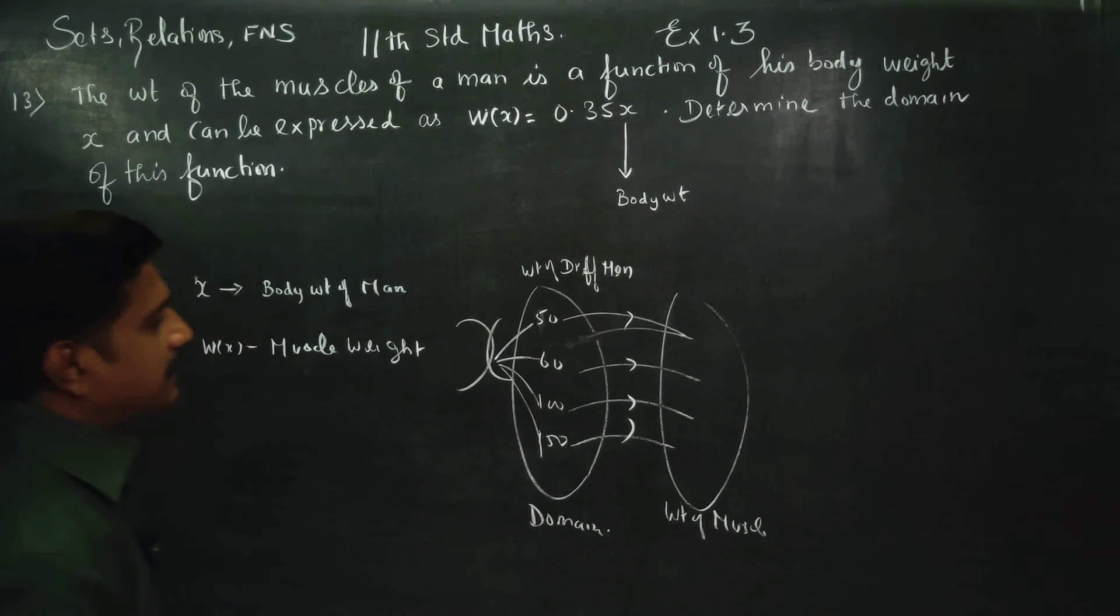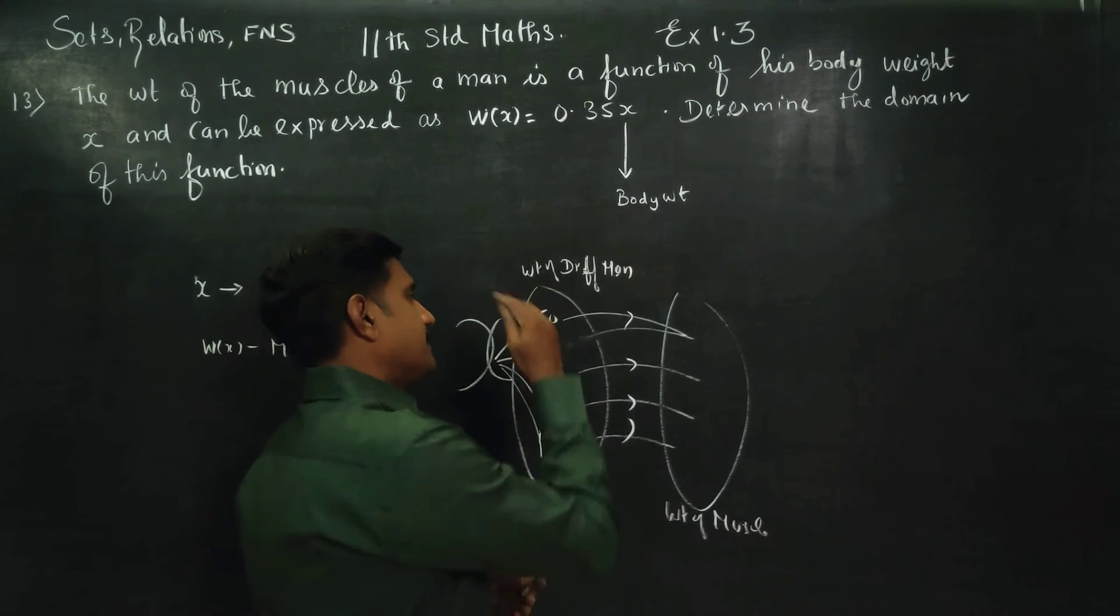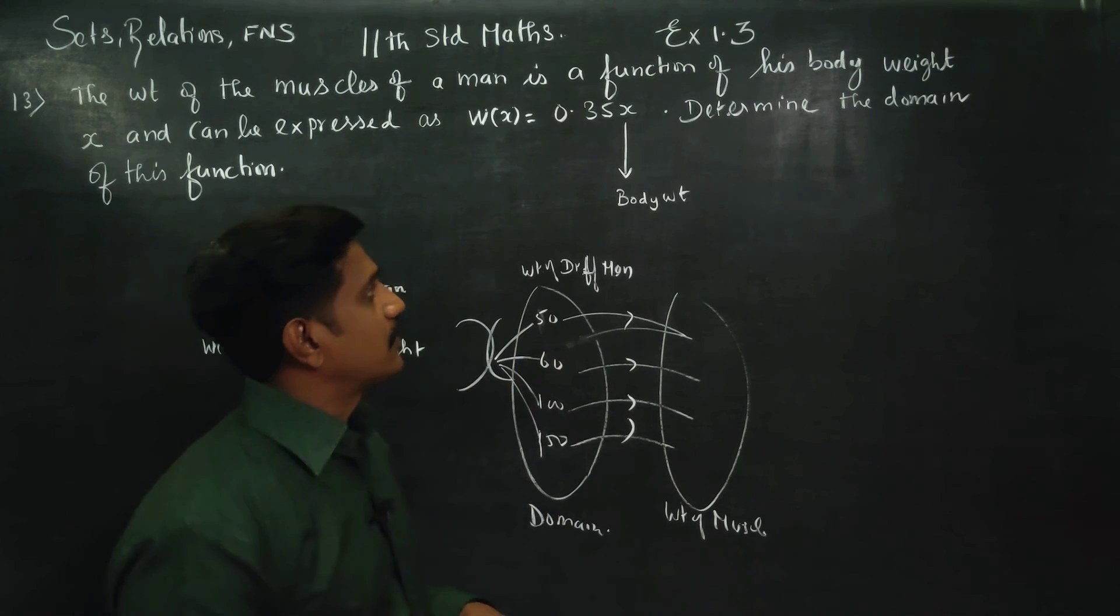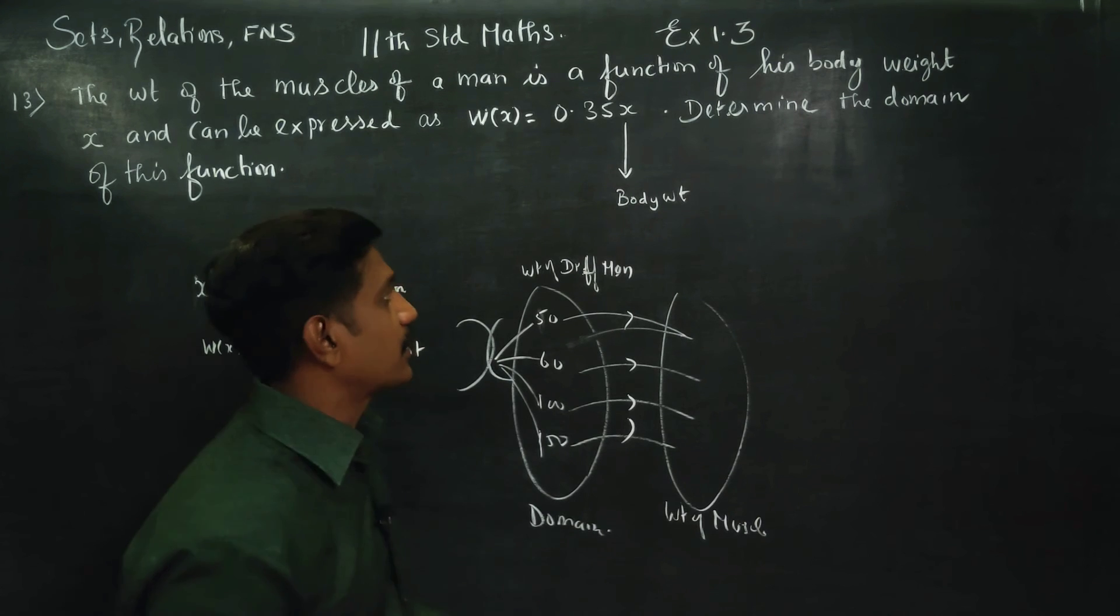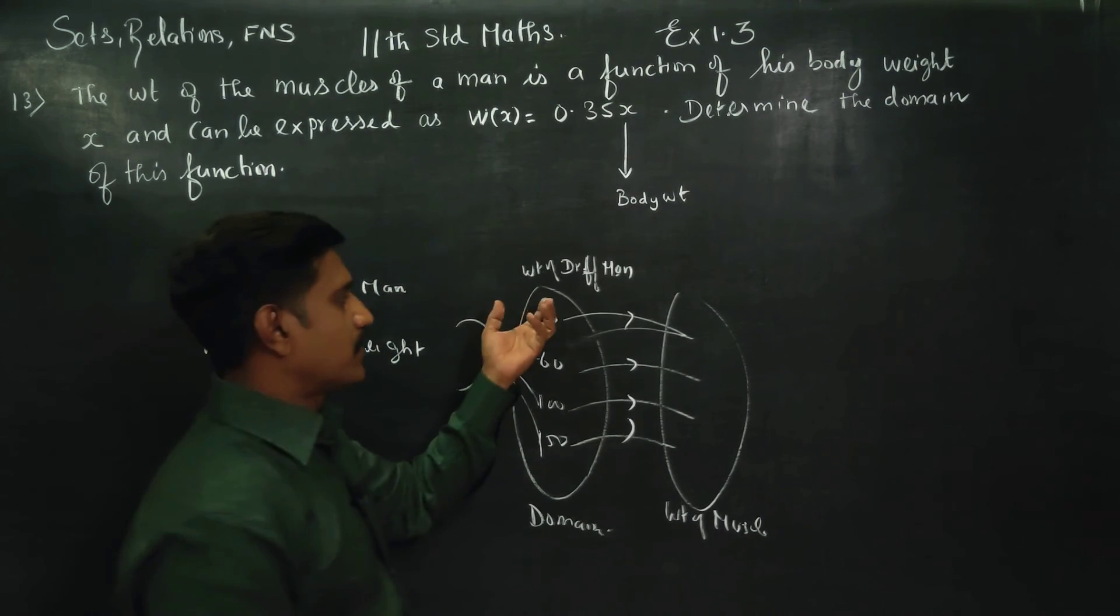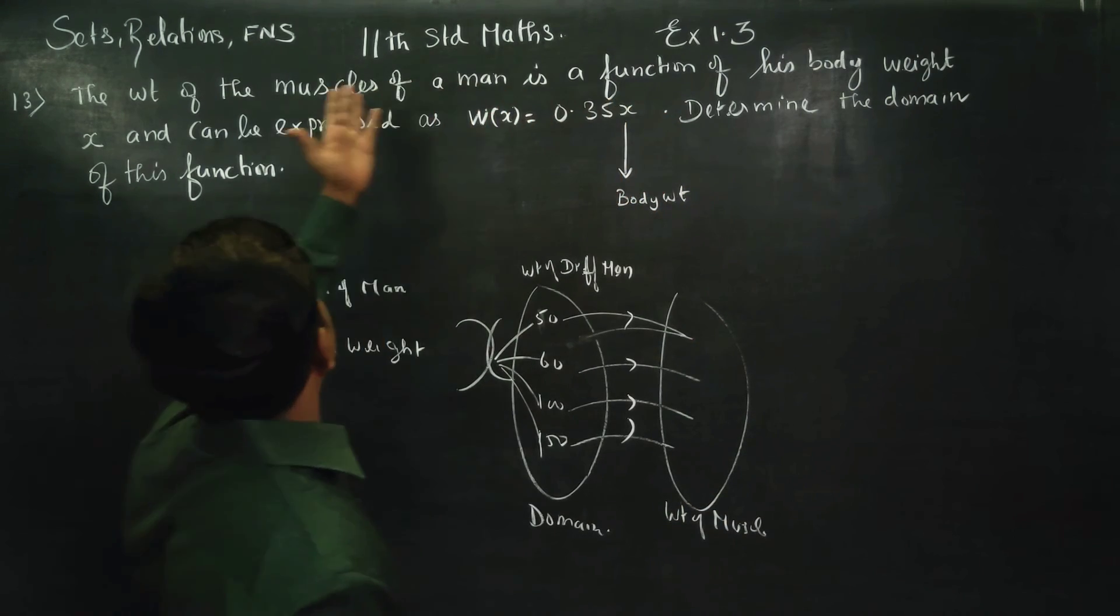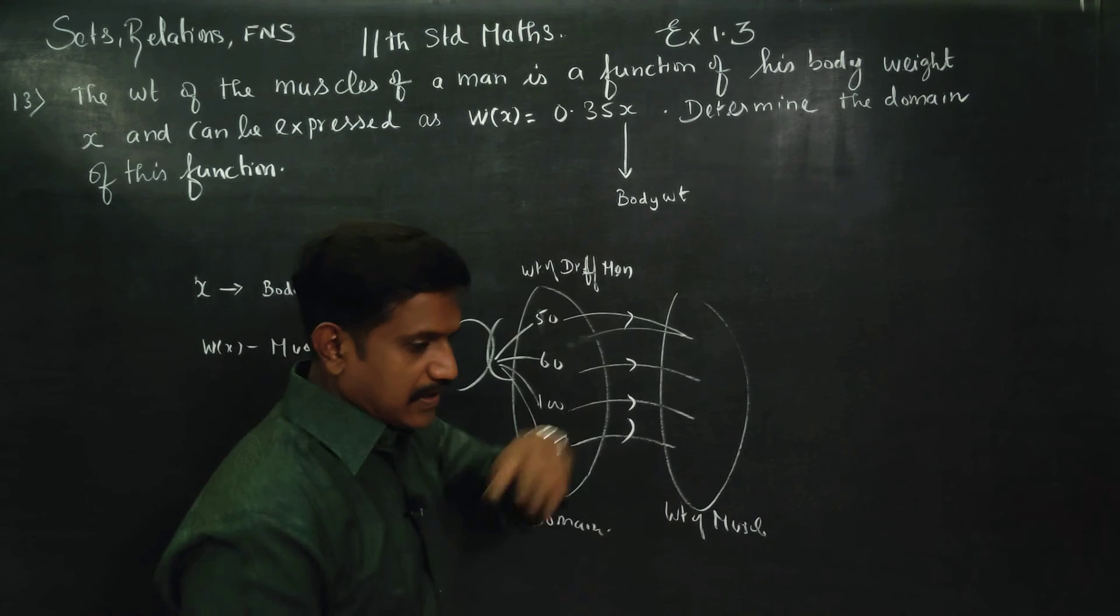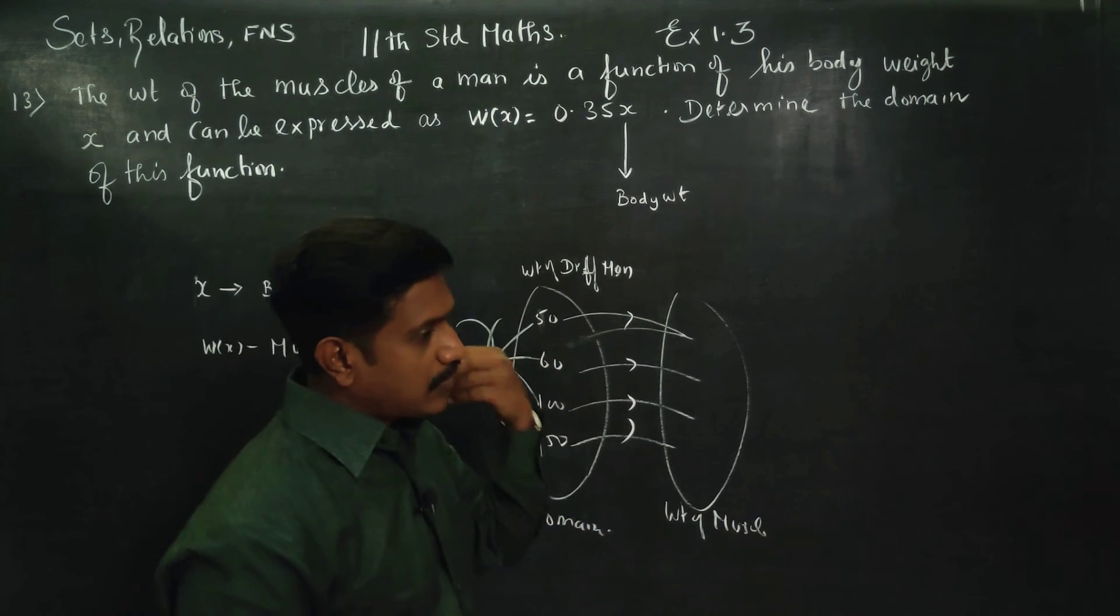The question is, you will be able to determine the domain of this function. One question is, the weight is the man. All the categories are in the muscles of a man. If the man has to use the weight, then the minimum and maximum weight would be there.